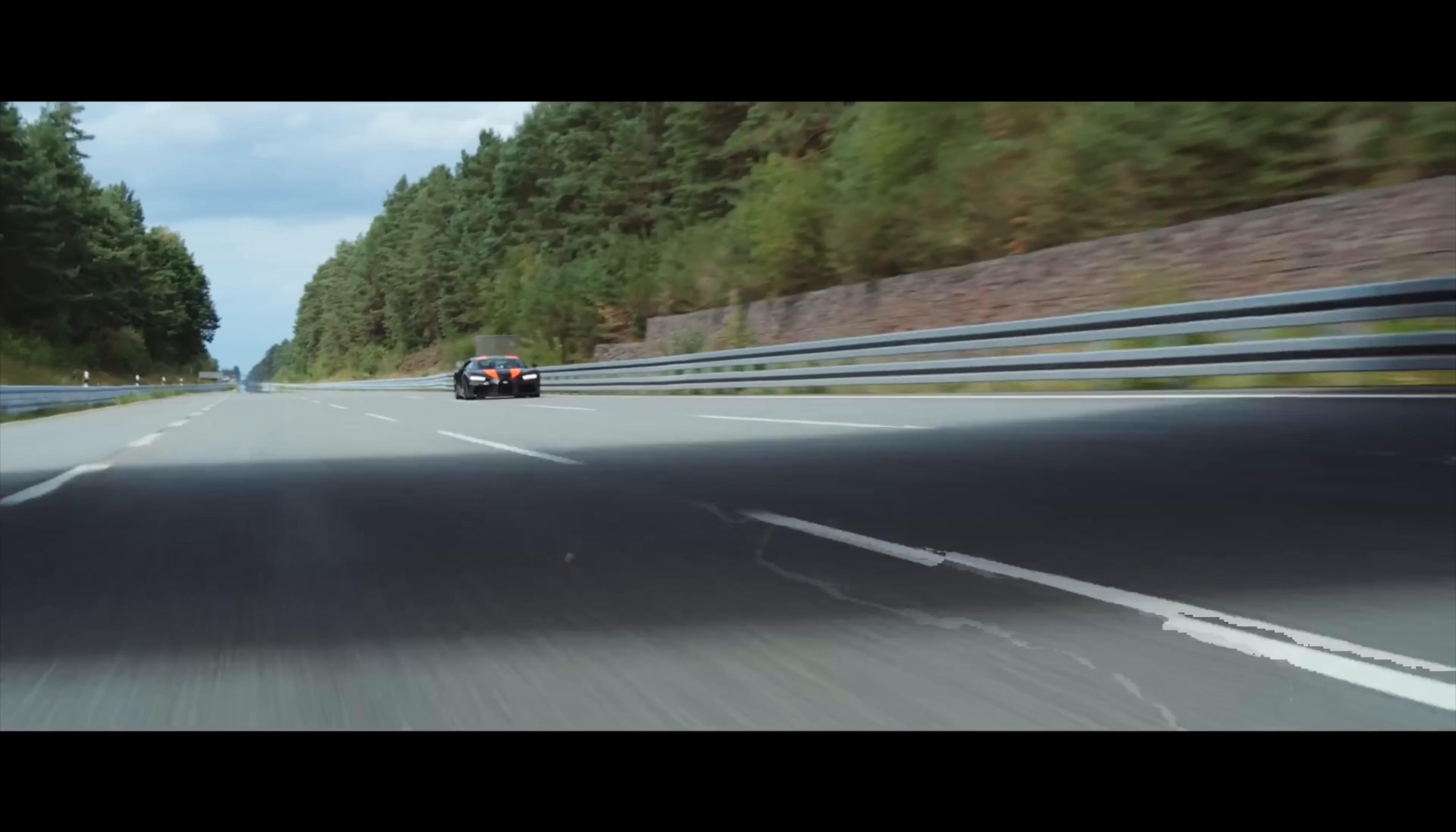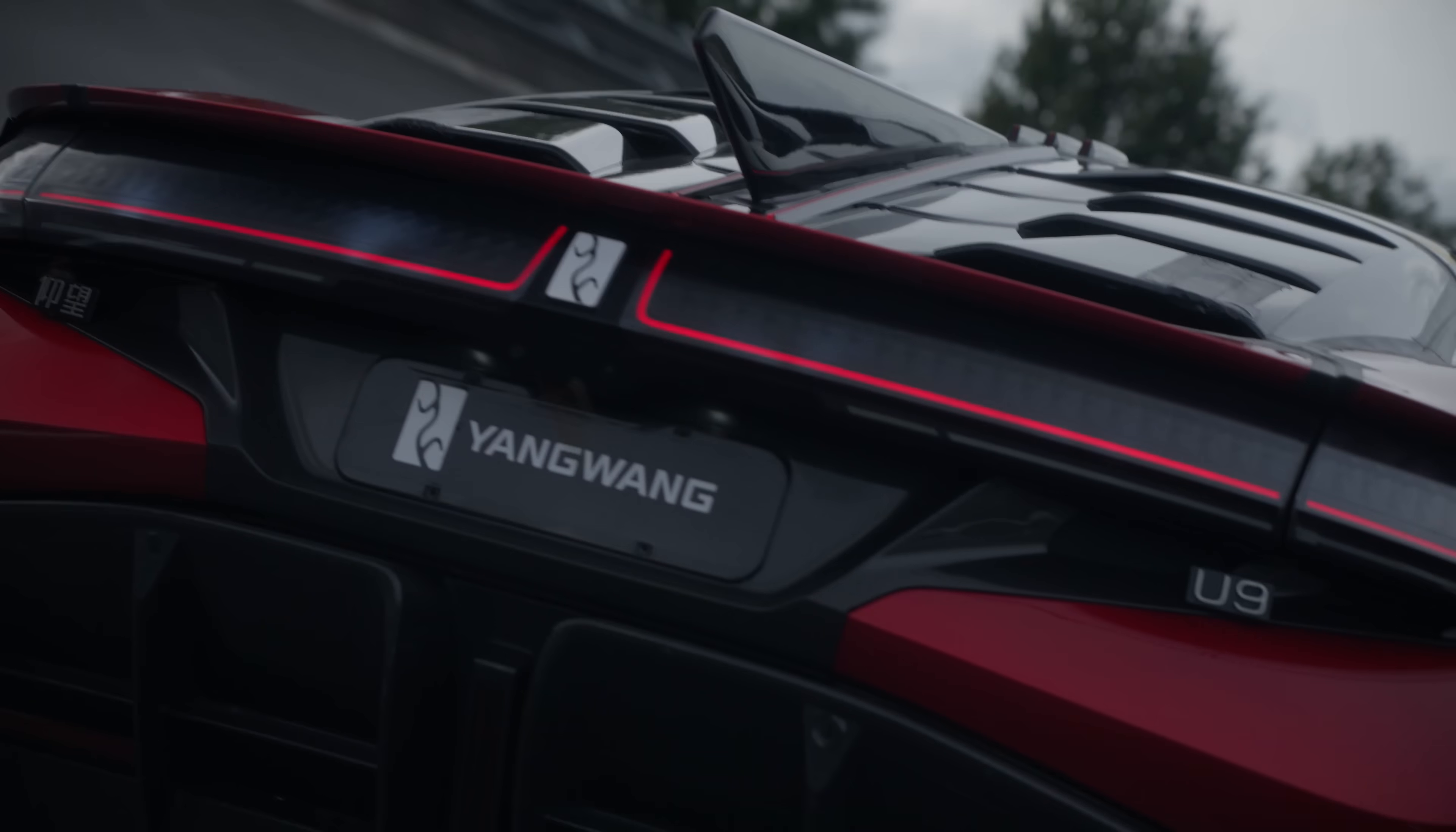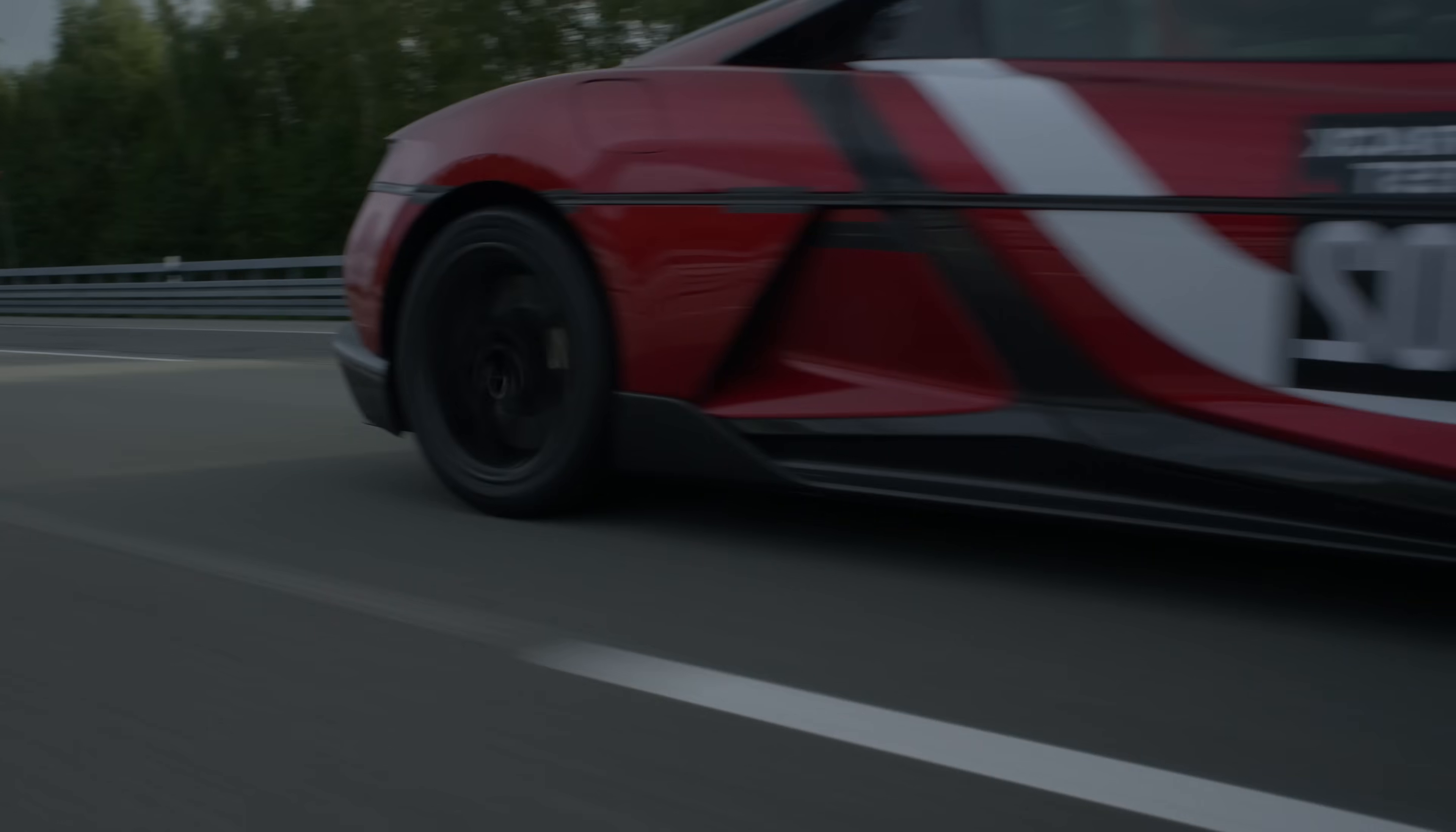Only two production cars have ever exceeded 300 miles per hour in an instrumented test. First was the 1600 horsepower Bugatti Chiron, which has now been dethroned by the nearly 3000 horsepower Yangwang U9 Extreme, which reached nearly 500 kilometers per hour in this record-beating run. Now calling either of these production cars is a bit of a stretch, as both were modified for their respective runs, and neither completed a run in both directions.